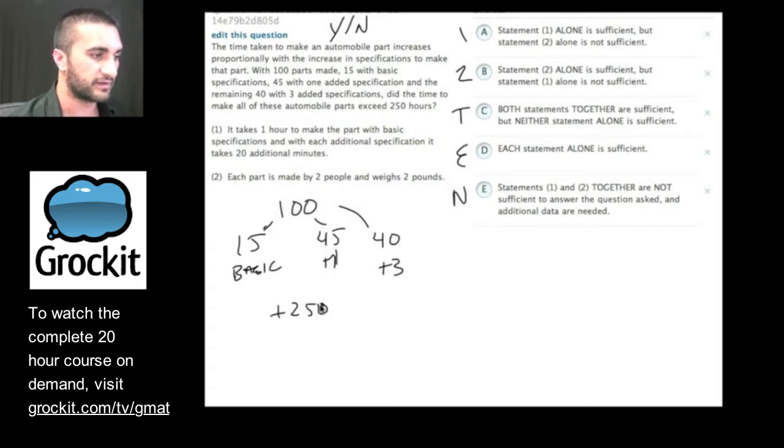Plus 250, yes or no? So let's take a look at statement one, and this is everything you're seeing me doing here is what I'm doing on my GMAT scratch pad. It takes one hour to make the part with basic specifications, so one hour for basic. And with each additional specification, it takes 20 additional minutes. So to do a plus one, it would take one hour, or one and a third hours to do a plus one. And it would take, to do a plus three, it should take us two hours, because one hour to make the basic parts, and 20 minutes for each additional specification. On plus three specifications, there's three additionals, so three times 20 will give us another hour, so two hours.